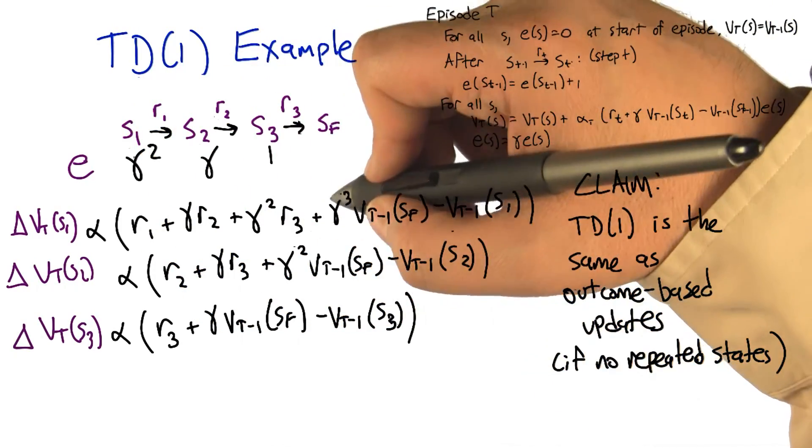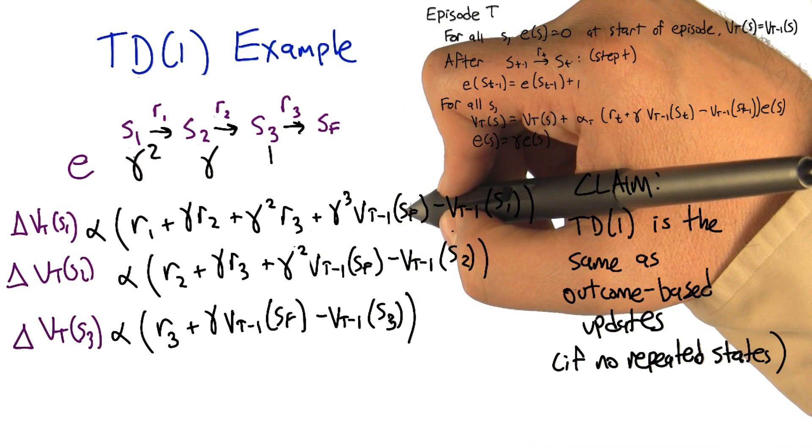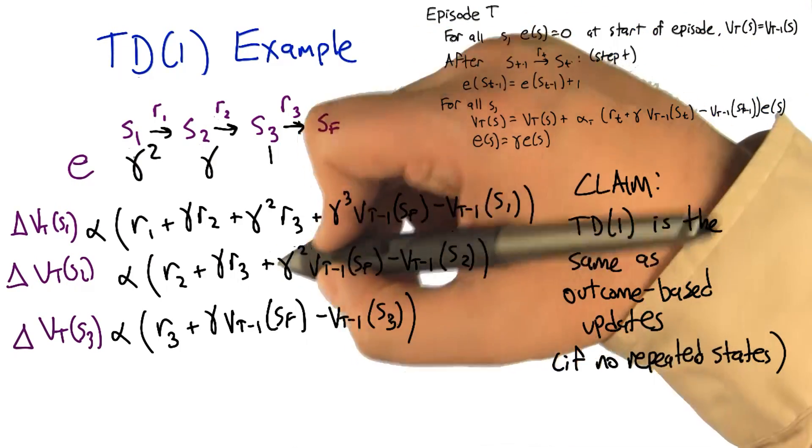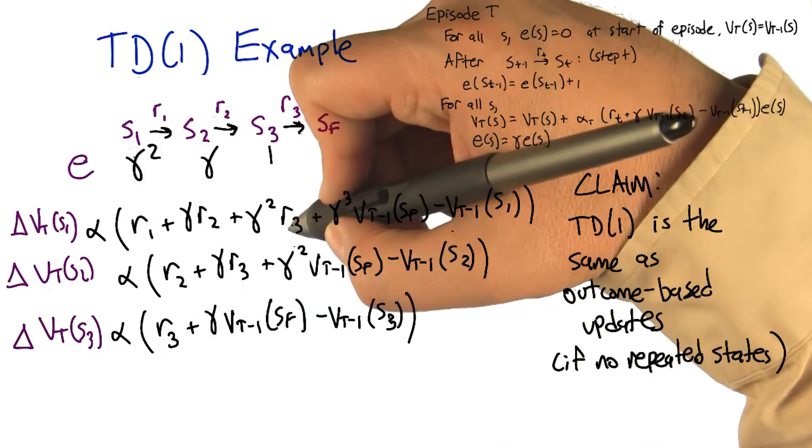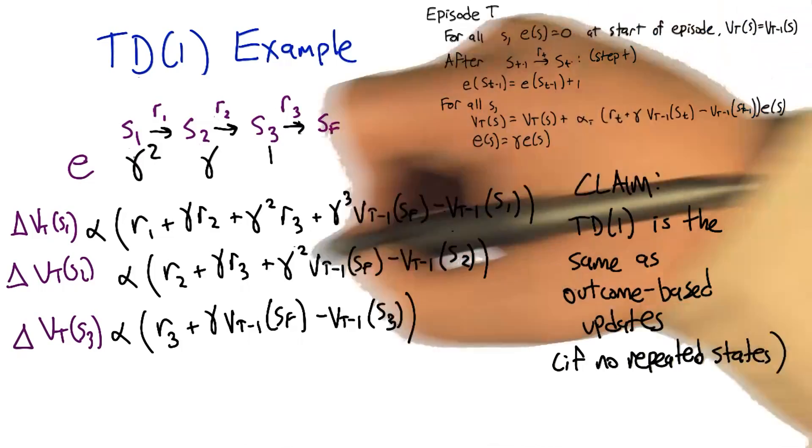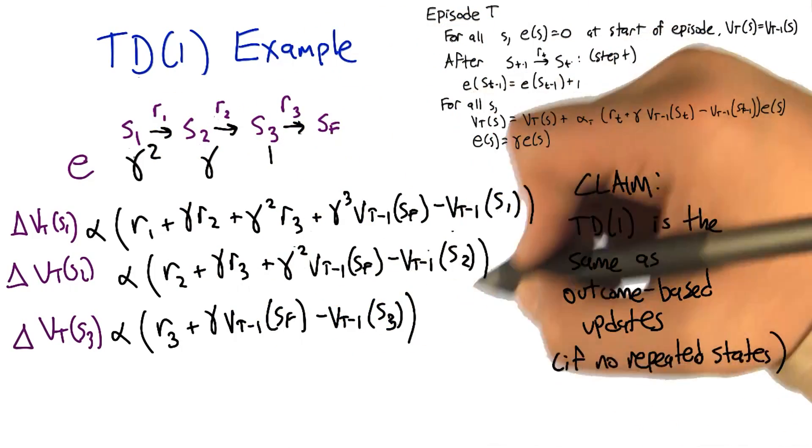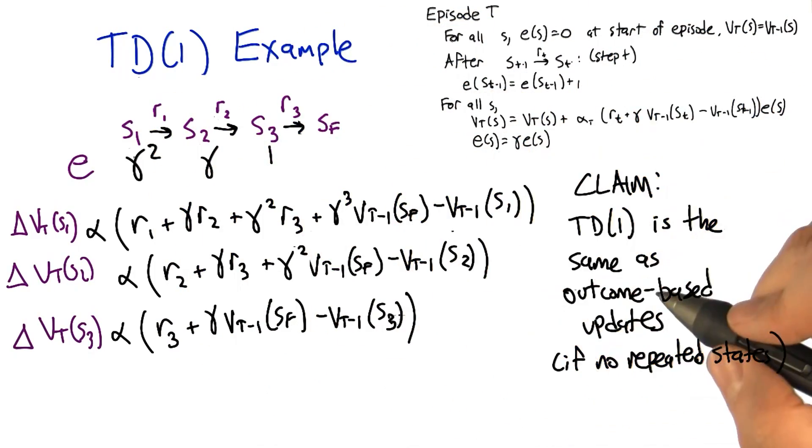Keep in mind that these things are zero, the VT minus one of SF is zero. So this kind of goes away, and this kind of goes away, and this kind of goes away. And we're really just talking about the discounted sum of rewards minus the old prediction. The discounted sum of rewards minus the old prediction. The discounted sum of rewards minus the old prediction.